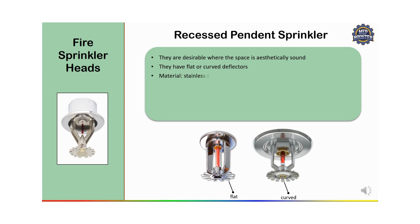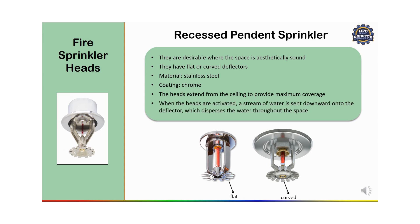The cover plate hides the sprinkler mechanism easily. The material is stainless steel with a chrome coating, and the head extends from the ceiling to provide maximum coverage. The recessed pendant sprinkler offers a clean look and blends with the ceiling. It is ideal where appearance is important, such as hotels and high-end commercial spaces. When activated, water is sent downward onto the deflector which disperses the water throughout the space.